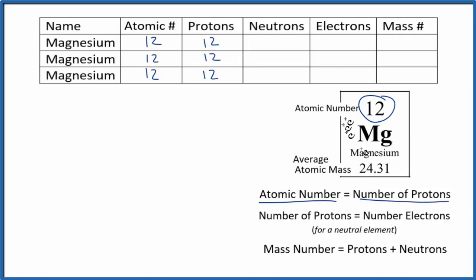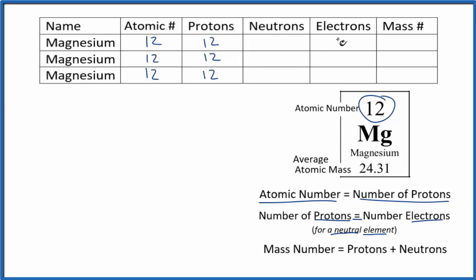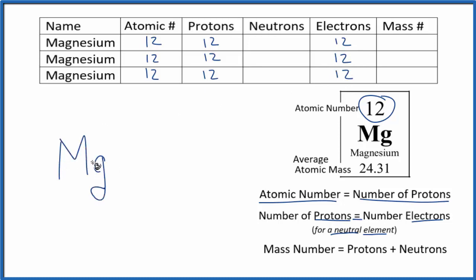When we look at the periodic table we see Mg here. All of the elements on the periodic table are neutral elements, so the number of protons equals the number of electrons. We can say we have 12 electrons for each one of these isotopes. If you have Mg written as just Mg, that's a neutral element — protons equal electrons.